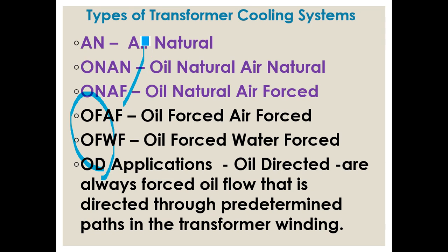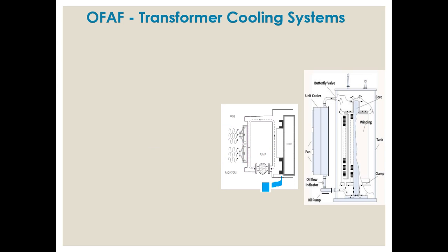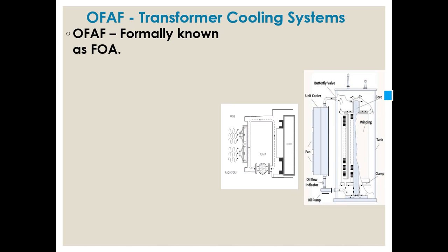In OFAF - oil force air force - the air is forced by a fan and the oil is forced by an oil pump. Inside the main tank you can see the oil getting circulated through the pump. The oil flows through this area, forced by the pump, while air is forced by the fan. OFAF is used for bigger capacity transformers.